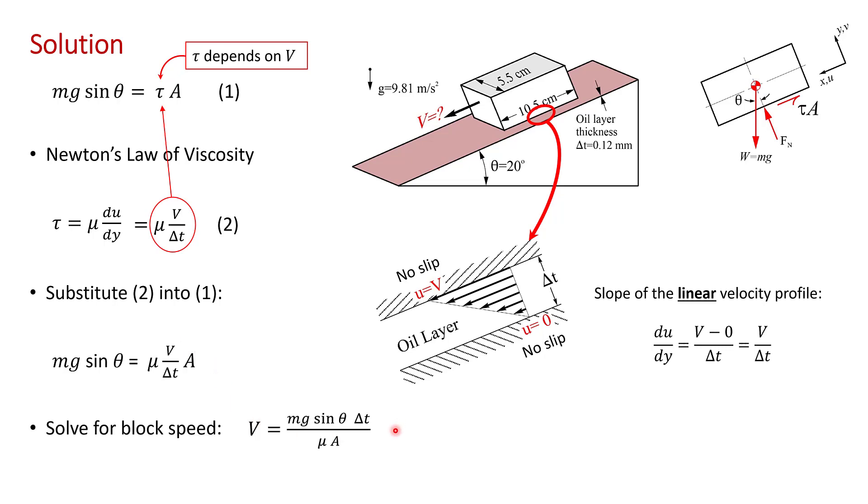So V equals mg sine theta over the thickness of the oil layer divided by the dynamic viscosity of the oil and the surface area. That's the surface area of the block in contact with the oil.